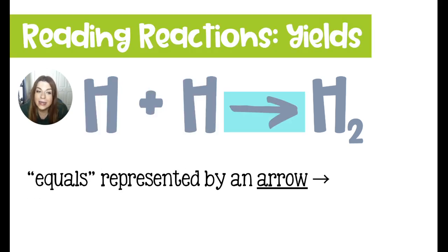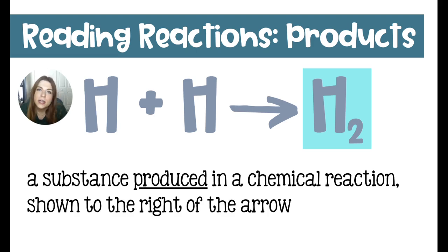The arrow is read yields, but we kind of think of it like a math equation and it means equals molecules. It's represented by an arrow. At the end of your chemical reaction, at the pointed end of the arrow, typically on the right side, are the products of your chemical reaction, or in other words, the things that come out.